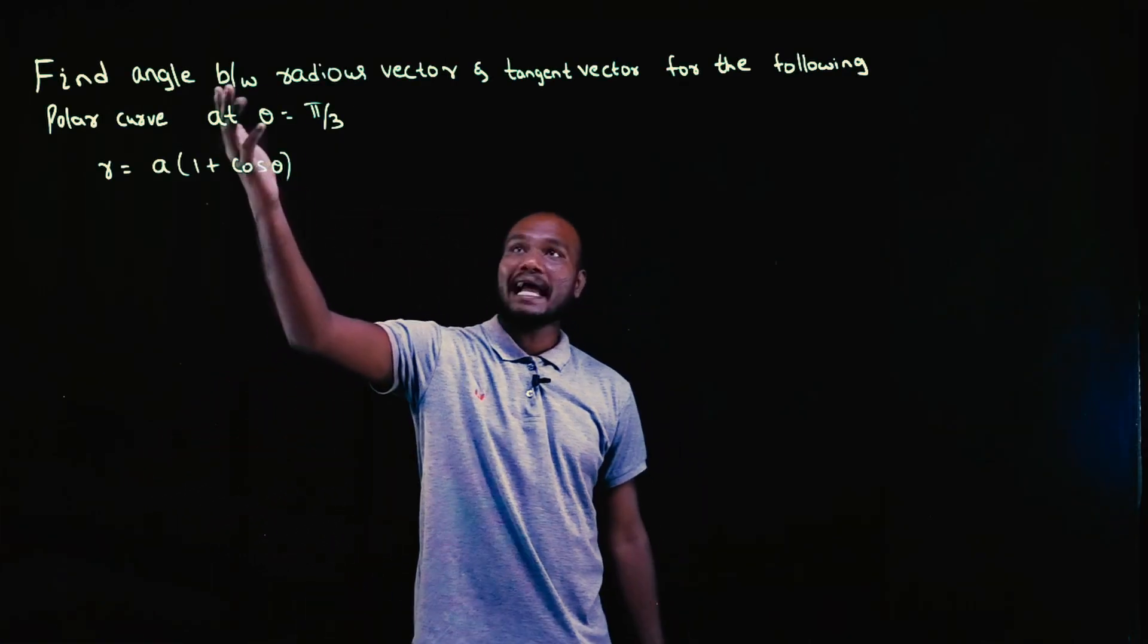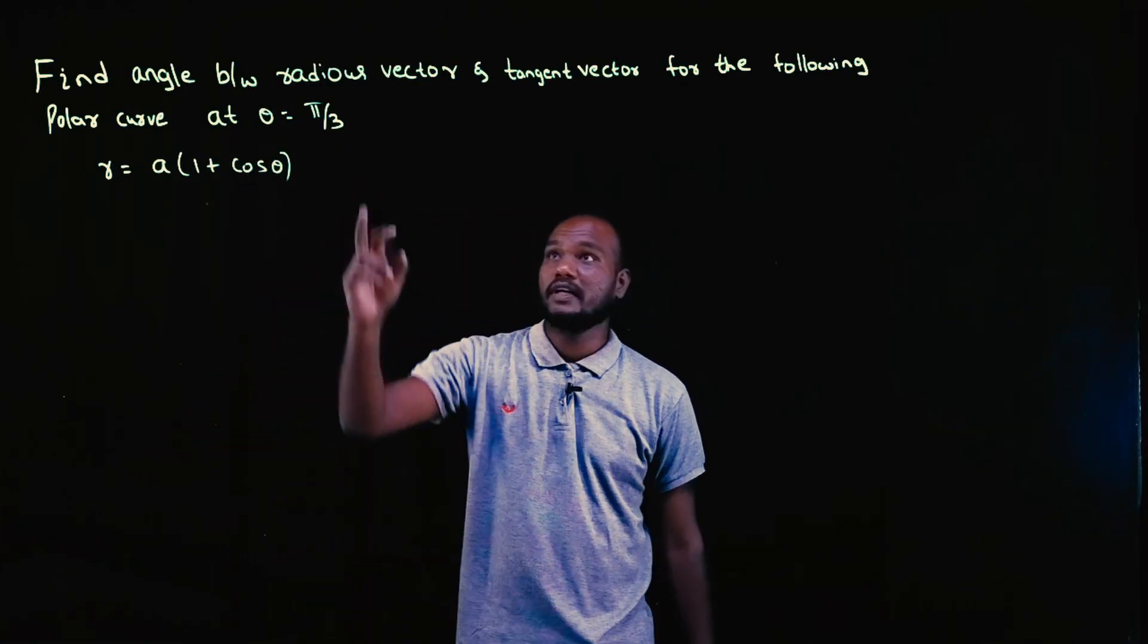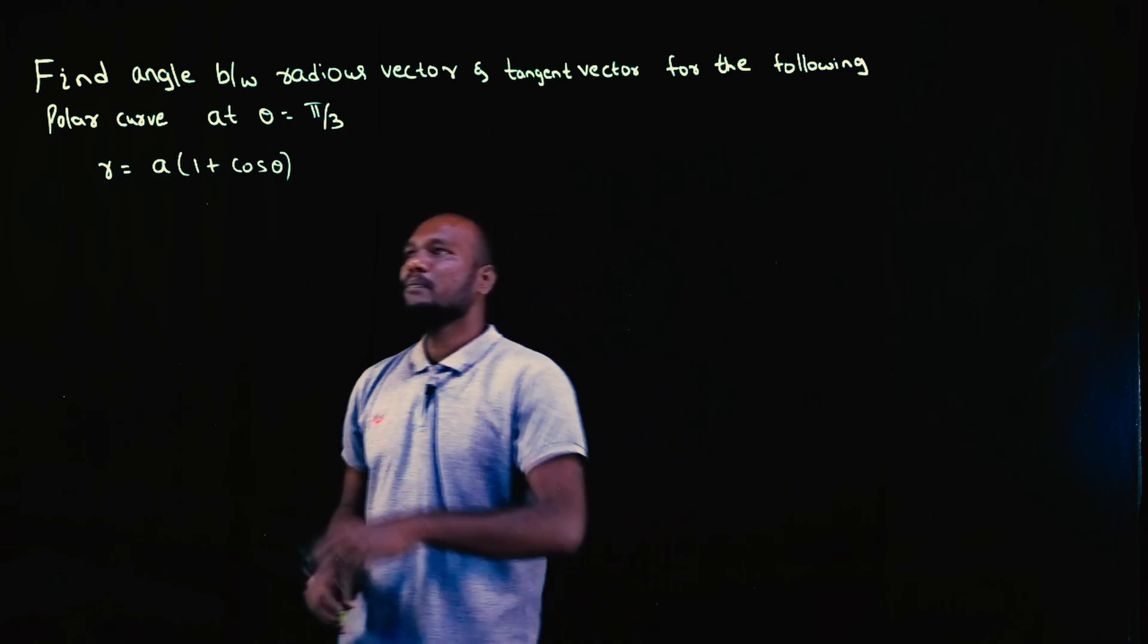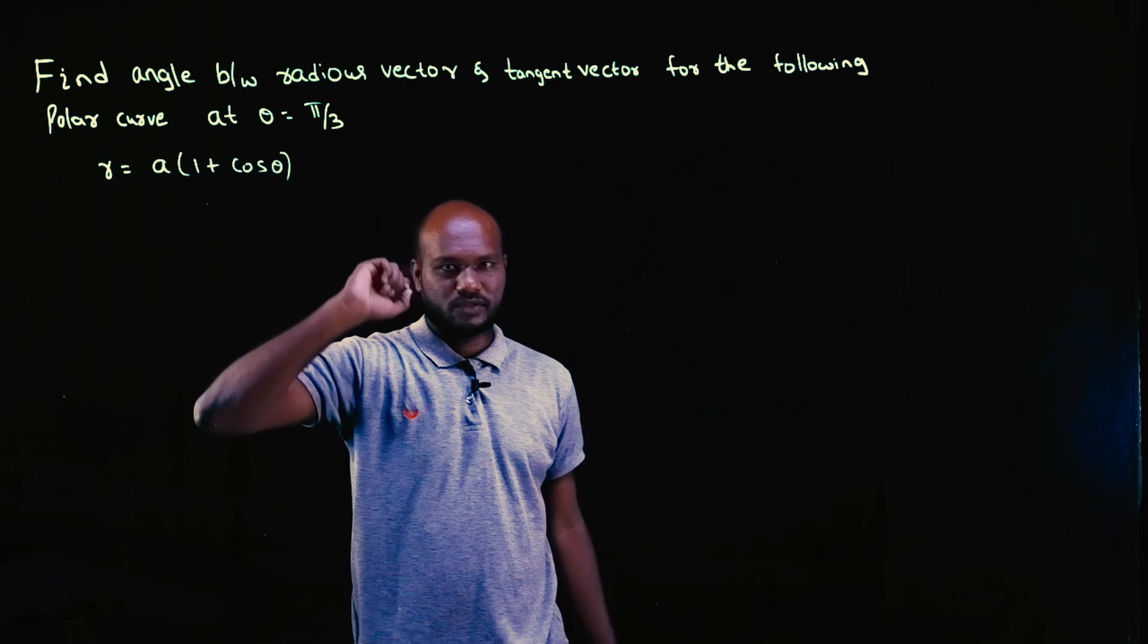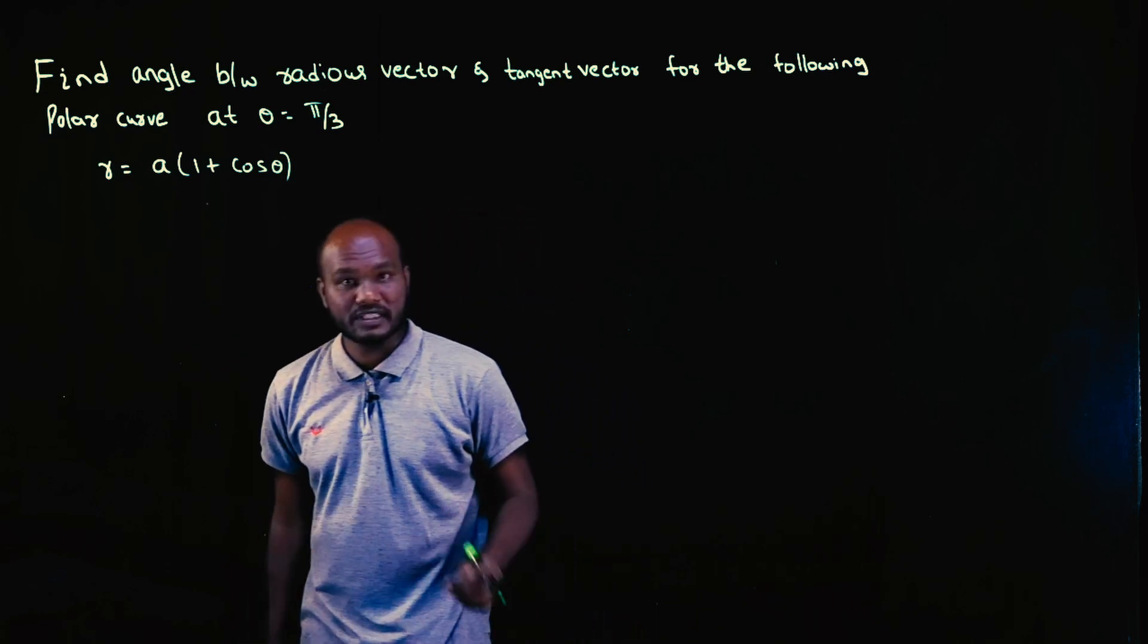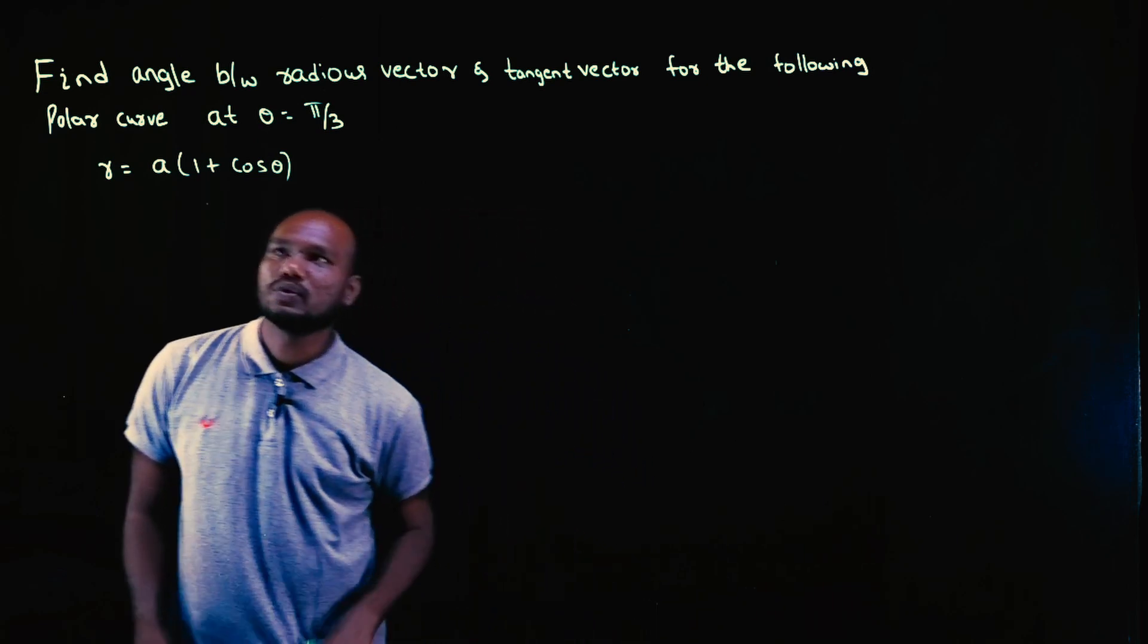Okay, the question here is we have to find the angle between radius vector and tangent vector for the given polar curve. One more thing is given: they give the value of theta. So phi will be a number, not in terms of theta.